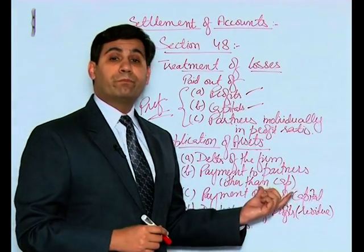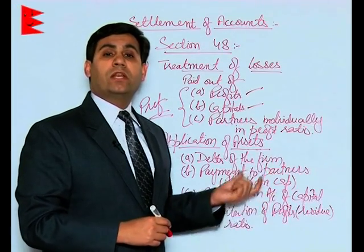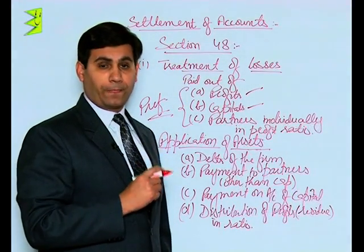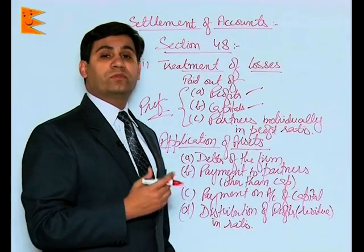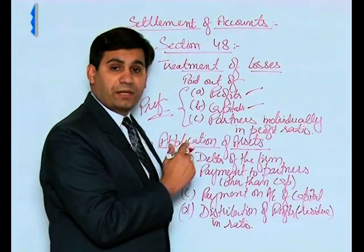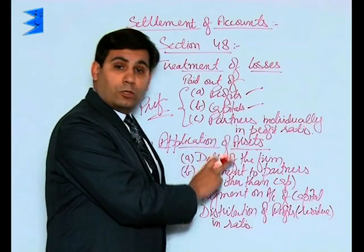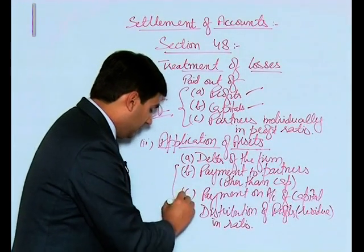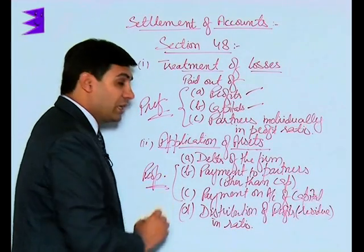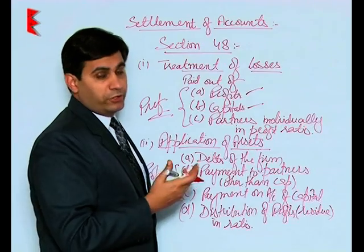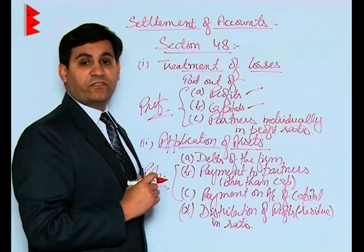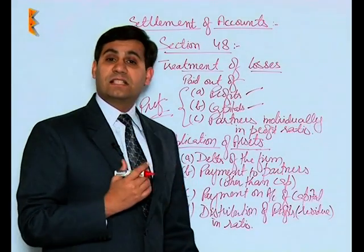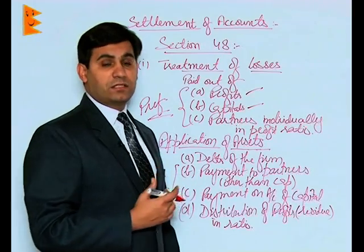Then comes payment to the partners on account of their loans — other than capital. If a partner has advanced a loan to the firm, payment should be made on account of that loan before payment is made on account of capital. So loans are paid off first, before the capital amount is paid. Remember, this payment can also be proportional — if the full amount is available you pay it off completely, but if there is a deficiency of cash, only proportional payments have to be made.